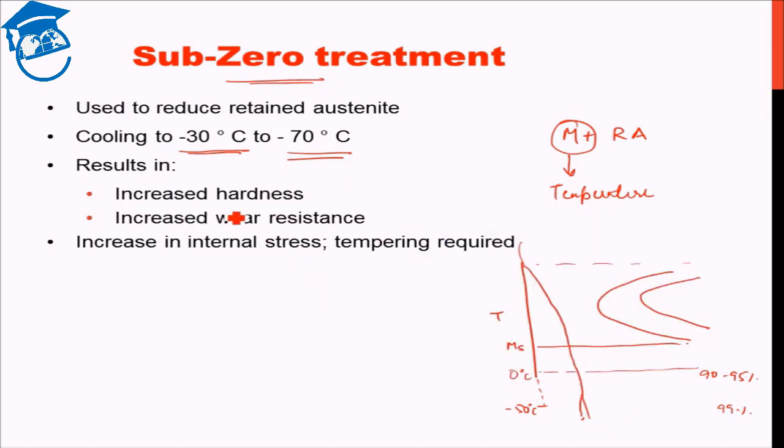This leads to increased hardness because we now have a very high percentage of martensite and very less amount of retained austenite. The hardness ends up being very, very high and the wear resistance is also very much improved as a result of the subzero treatment. Problems with subzero treatment: lot of internal stress development, increase in internal stress and obviously like any martensitic treatment, tempering is required even after subzero treatment.